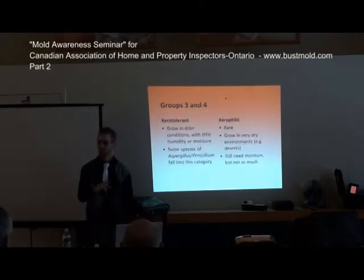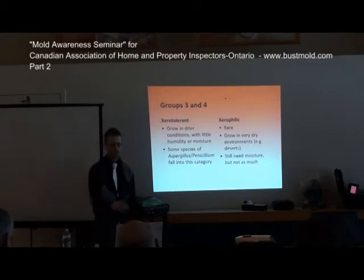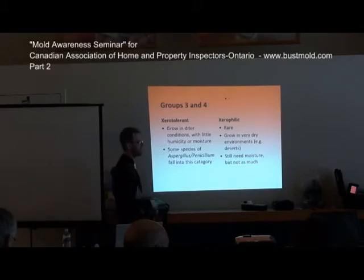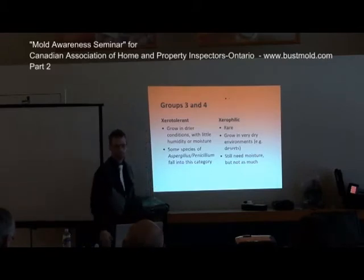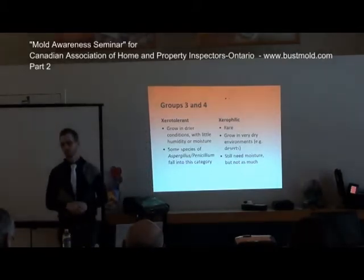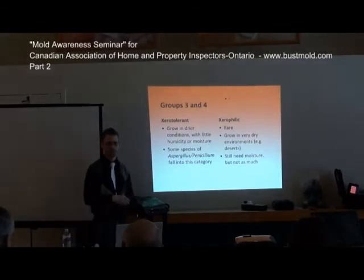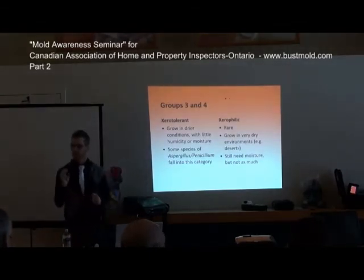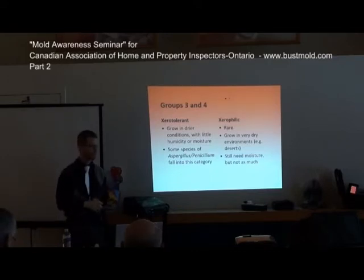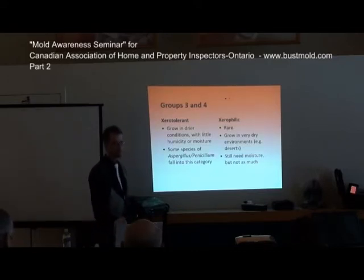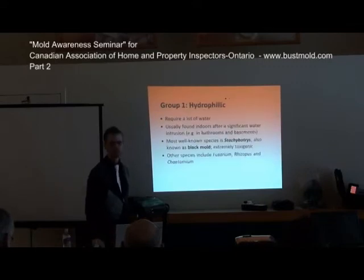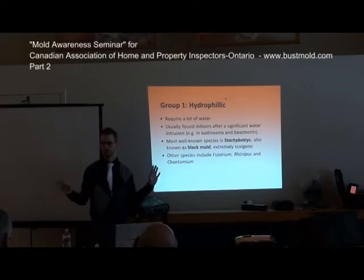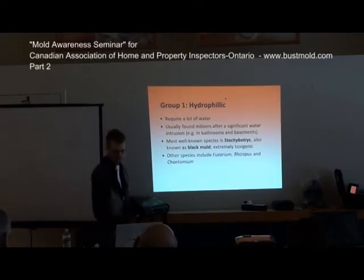The other three mold categories are pretty rare, especially in Ottawa. One of them is zero-tolerant, which grows in drier conditions with very little humidity or moisture. And the zero-philic one is something we won't see because it typically grows in dry environments like the desert — very rare, needs a little bit of moisture, but still exists. If you were to retain one type of mold in particular, hydrophilic is the one you would encounter the most in your day-to-day activities.